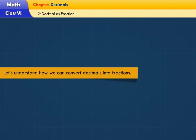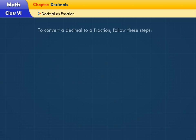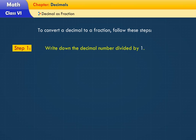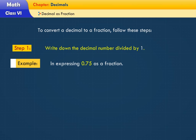Let's understand how we can convert decimals into fractions. To convert a decimal to a fraction, follow these steps. Step 1: Write down the decimal number divided by 1. For example, in expressing 0.75 as a fraction.